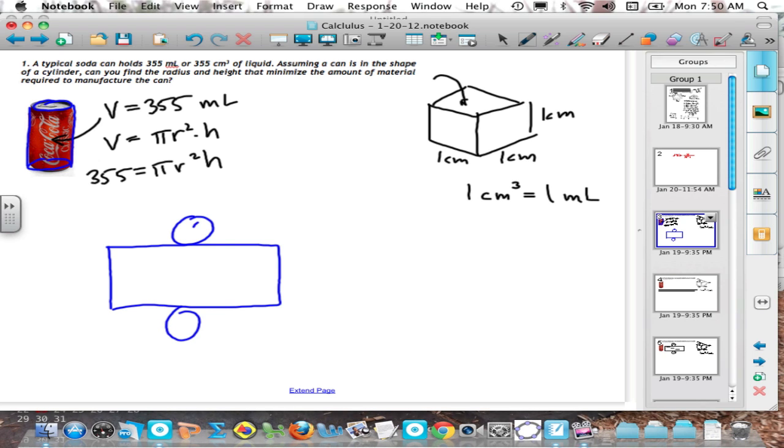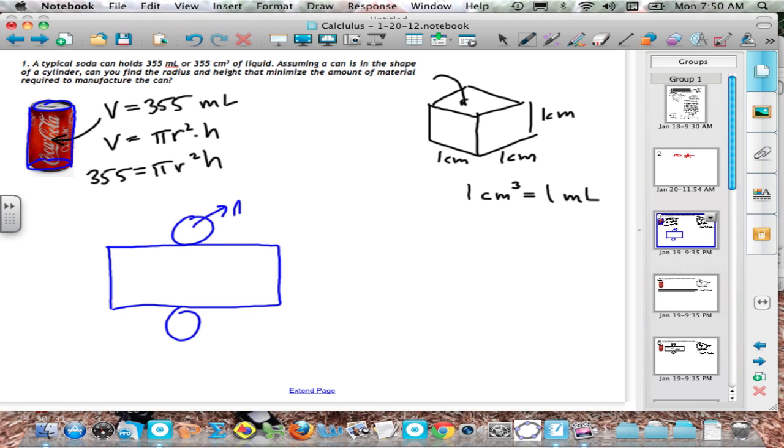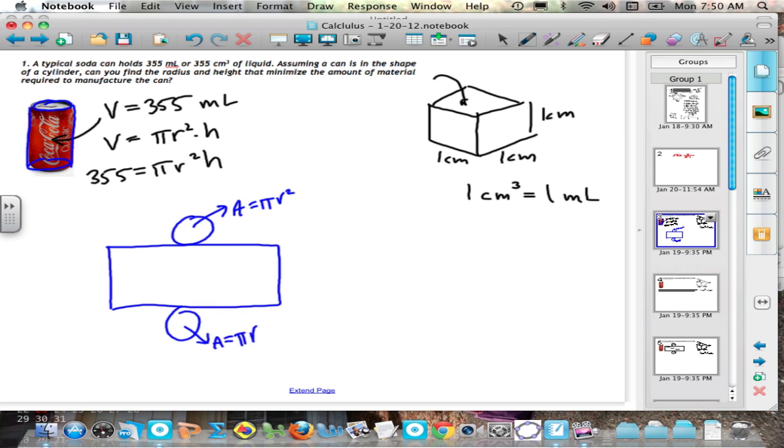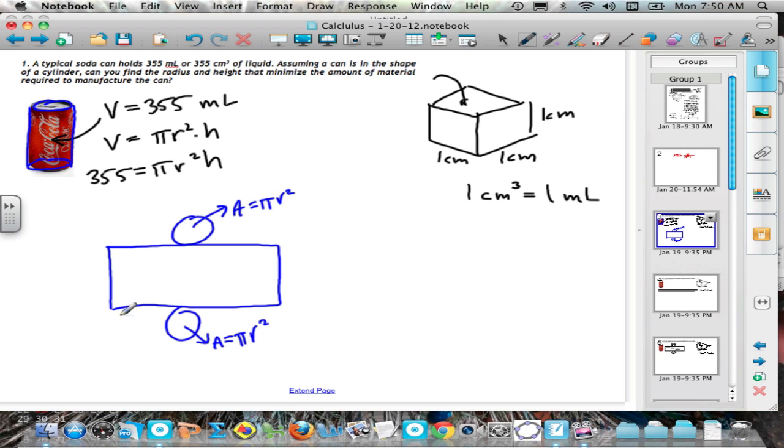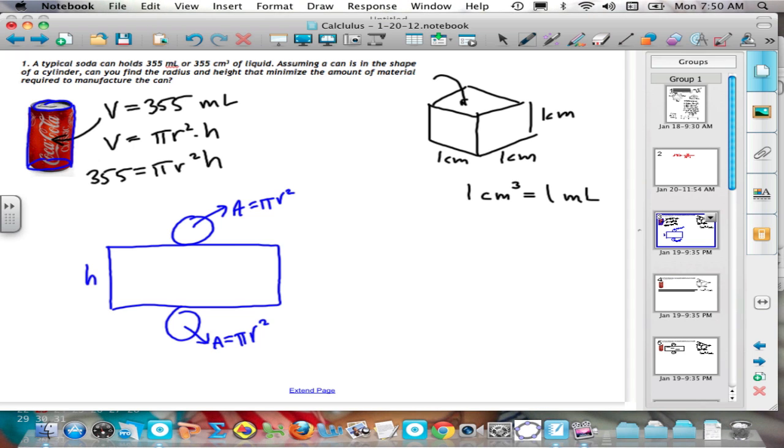And what that means is the top circle has an area of pi r squared, because it's a circle. The bottom circle is going to be the same pi r squared. Now it's just a matter of figuring out what the relationship between the rectangle, this rectangle here, and this can. Well, you can see, if I unwrap it, the height of the can is going to be the same as this here. So I'm going to use h to represent the height of the rectangle.